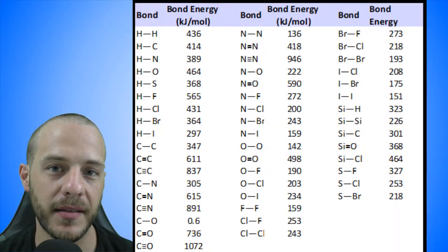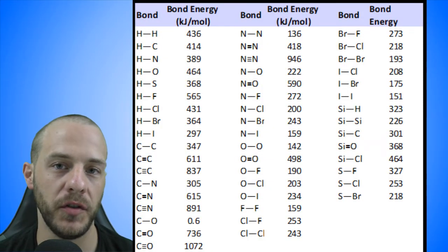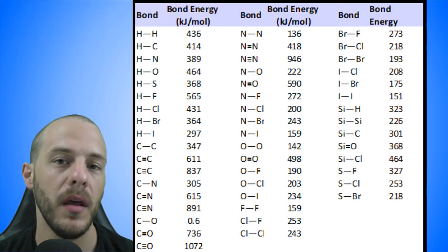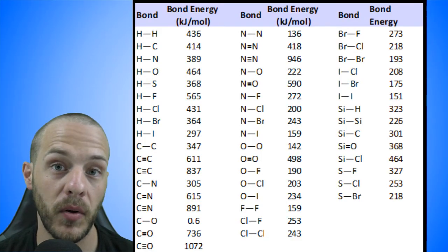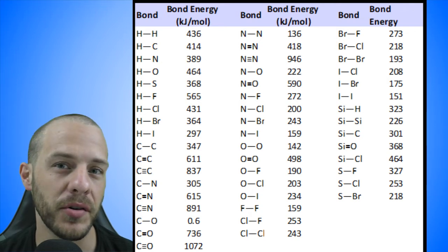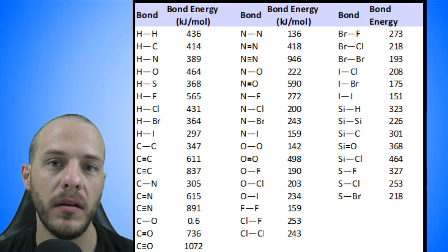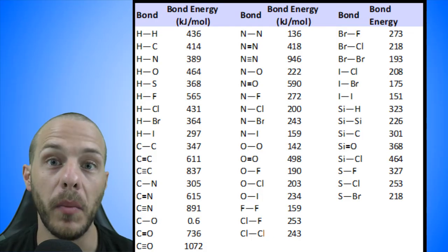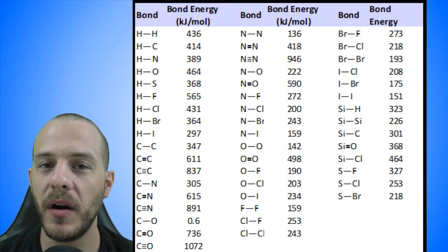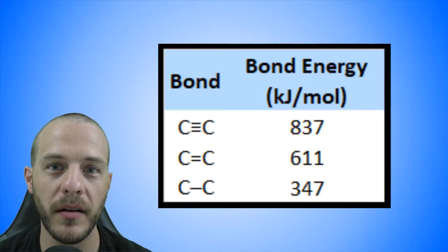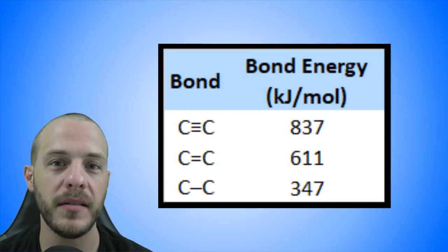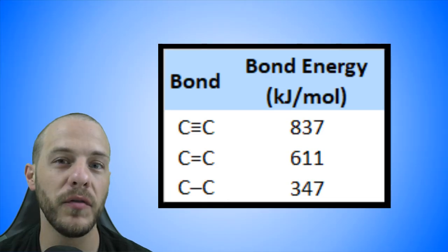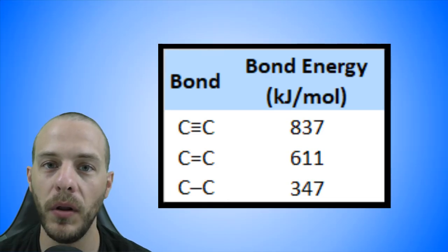Somewhere in your chemistry textbook, there's a table that shows the average bond energies for a multitude of chemical bonds. There are two very important observations we can make by studying this table. One is that triple bonds have higher bond energies and are therefore stronger than double bonds, which are stronger than single bonds. For instance, the average bond energies of a carbon-carbon triple bond, a carbon-carbon double bond, and a carbon-carbon single bond are 837, 611, and 347 kilojoules per mole, respectively.